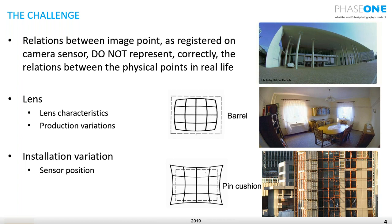I assume you agree that the cupboard is probably straight. However, in the image they are all registered as not straight lines. So the image does not correctly represent the relation between the physical points in real life, and this is because of lens characteristics. We also have product variations and installation variations and sensor position that the calibration takes care of, but the registration of the points is a physical characteristic of the lens.